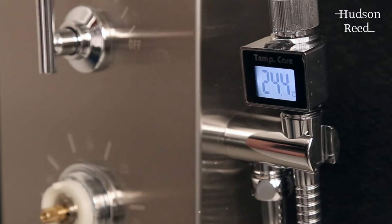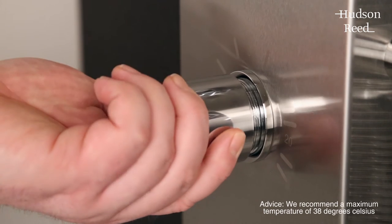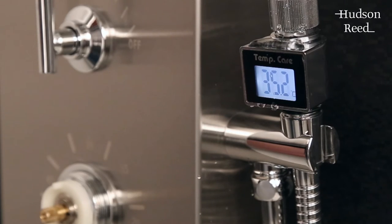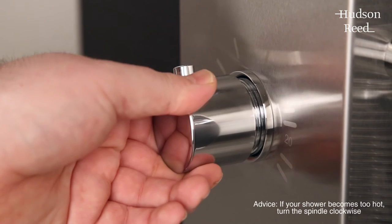Allow the temperature to regulate and if the shower is still too cold, proceed with another turn of the spindle one quarter of a turn anti-clockwise until you reach your desired maximum temperature.